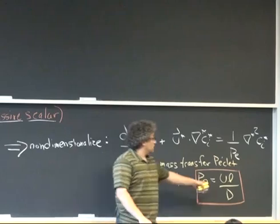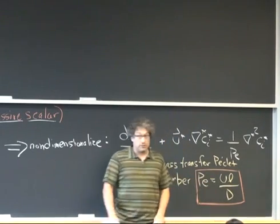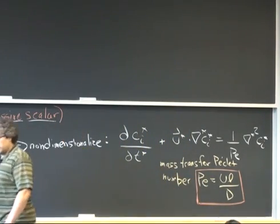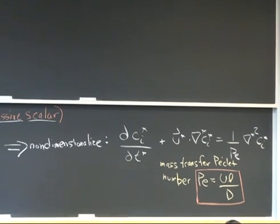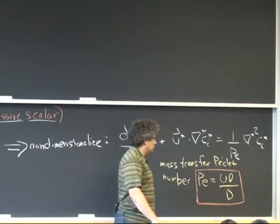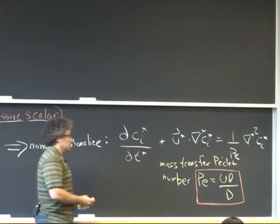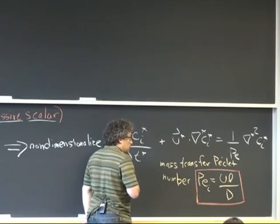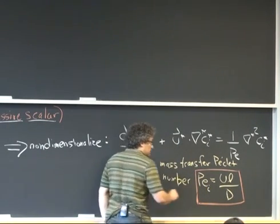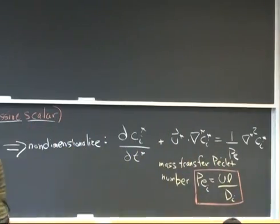Just as before, when we non-dimensionalize the Navier-Stokes equations, we're picking a characteristic velocity u and a characteristic length that come from the boundary conditions or inlet conditions. And we're non-dimensionalizing that by the scalar diffusivity denoted by capital D. Now, because we have many different species, in fact, there are different Peclet numbers for each species. So strictly speaking, there's a mass transfer Peclet number for each species i associated with the fact that there's a diffusivity of each species i.